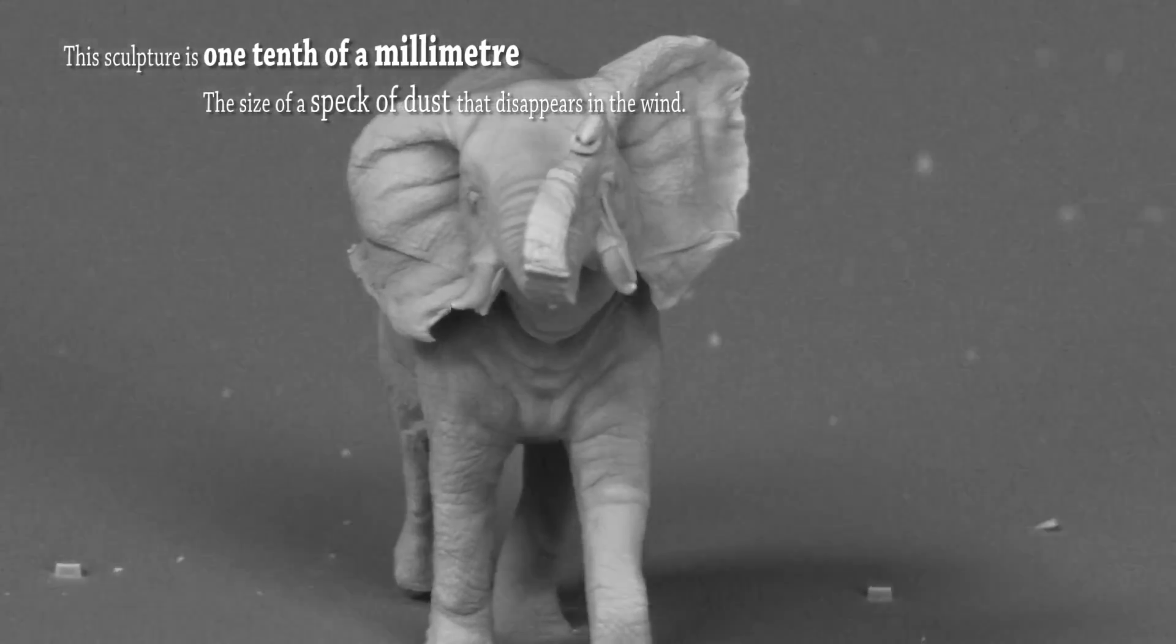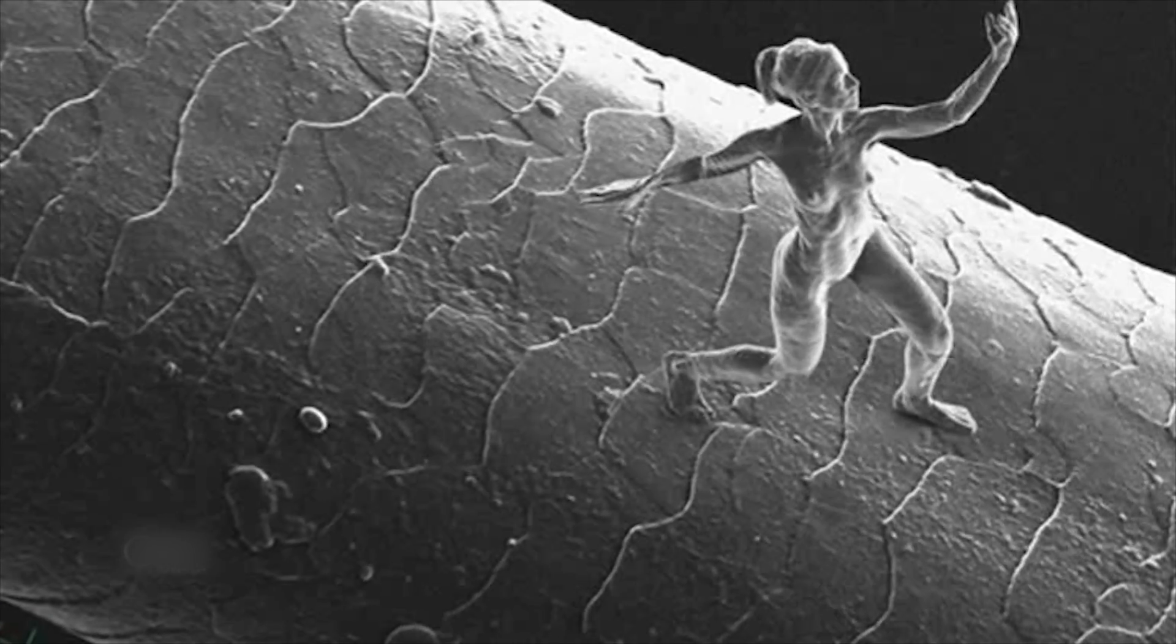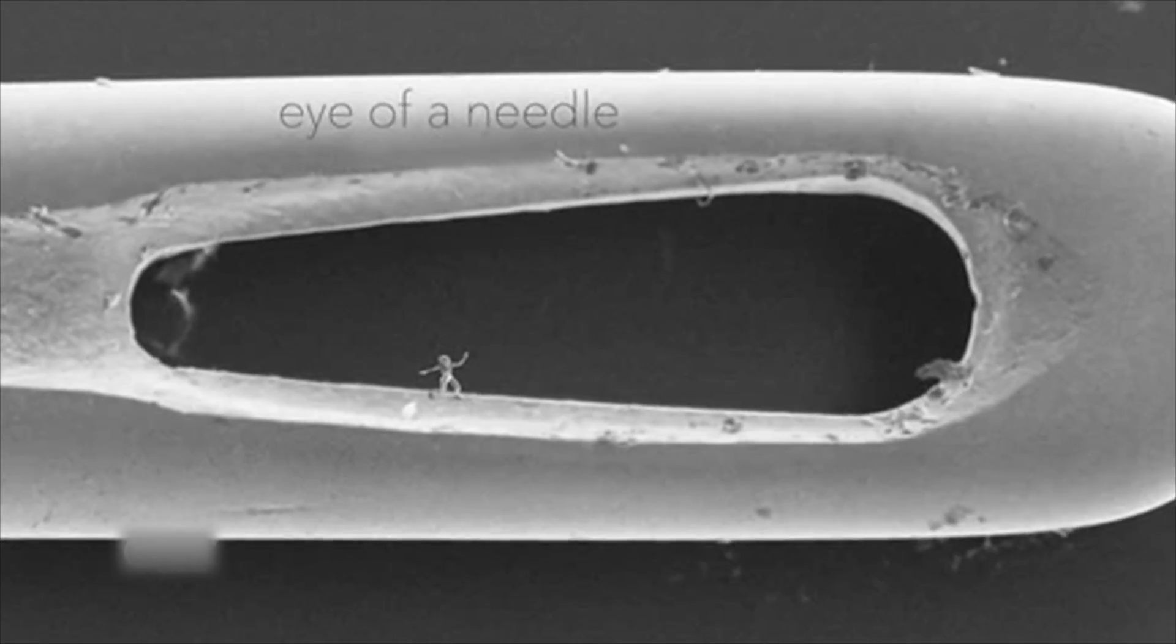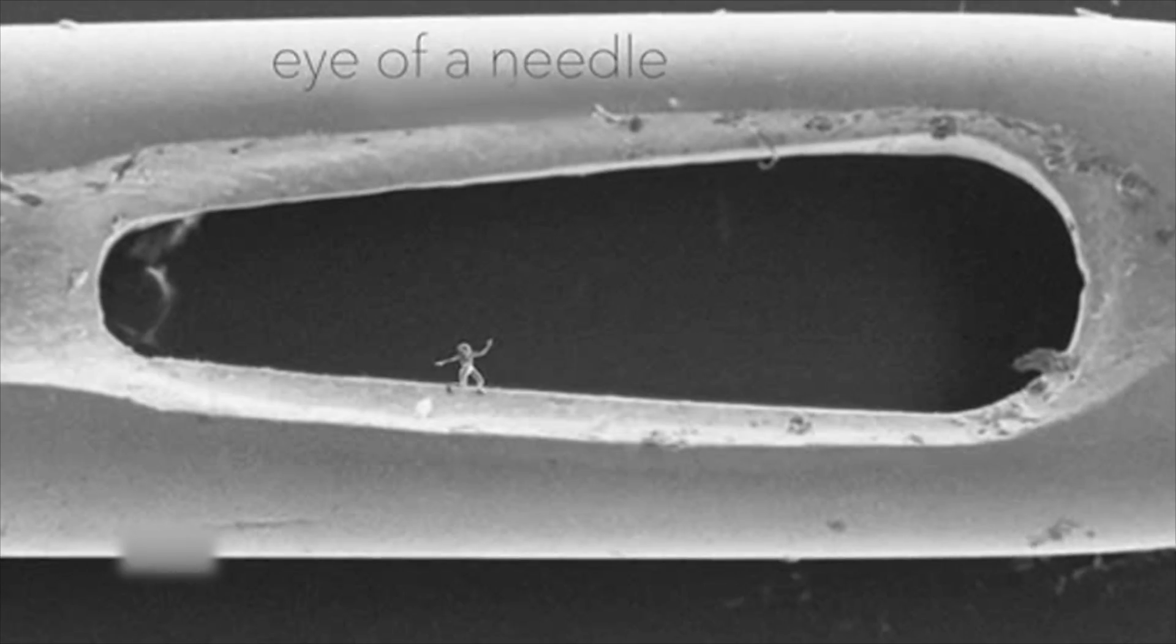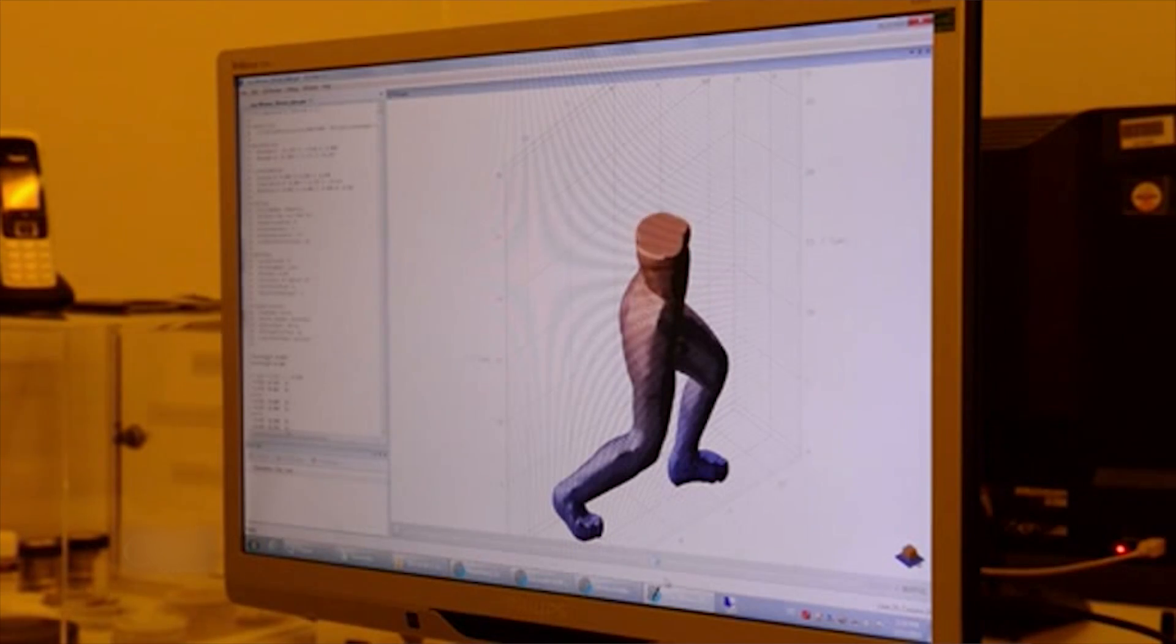This and the other nano sculptures including the one called Trust, the world's smallest sculpture of woman which is shown standing on a human hair, are made using a nano 3D printer technique called multi-photon lithography. This is where they use tiny layers of a light-sensitive liquid polymer which are laid down one layer at a time and then hardened with a focused laser.